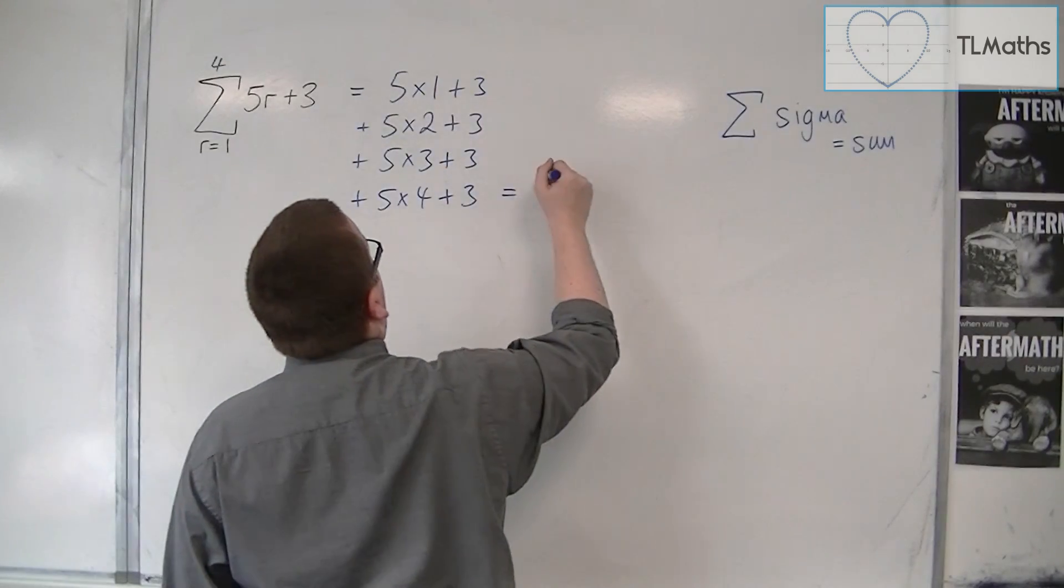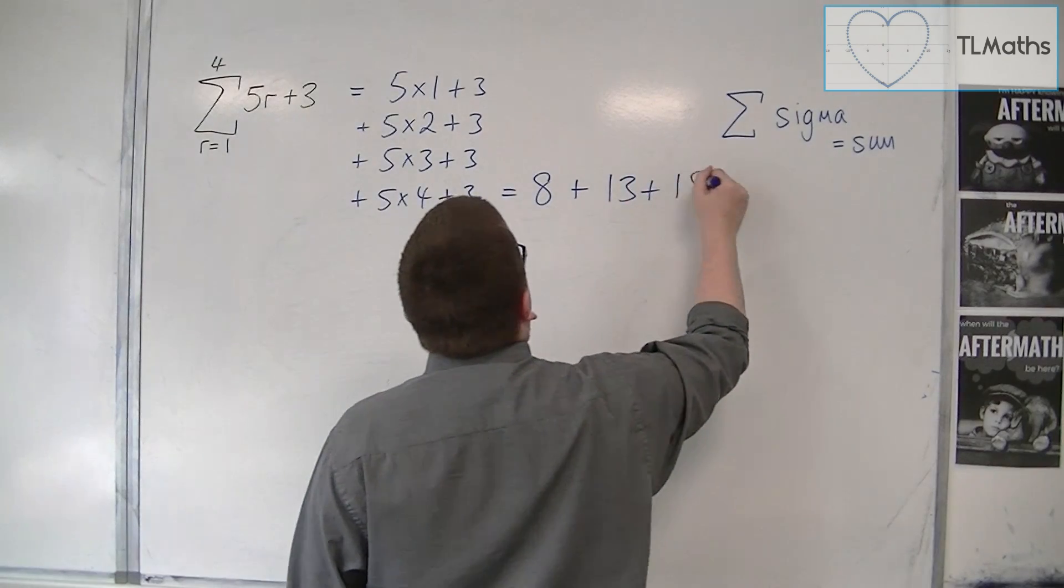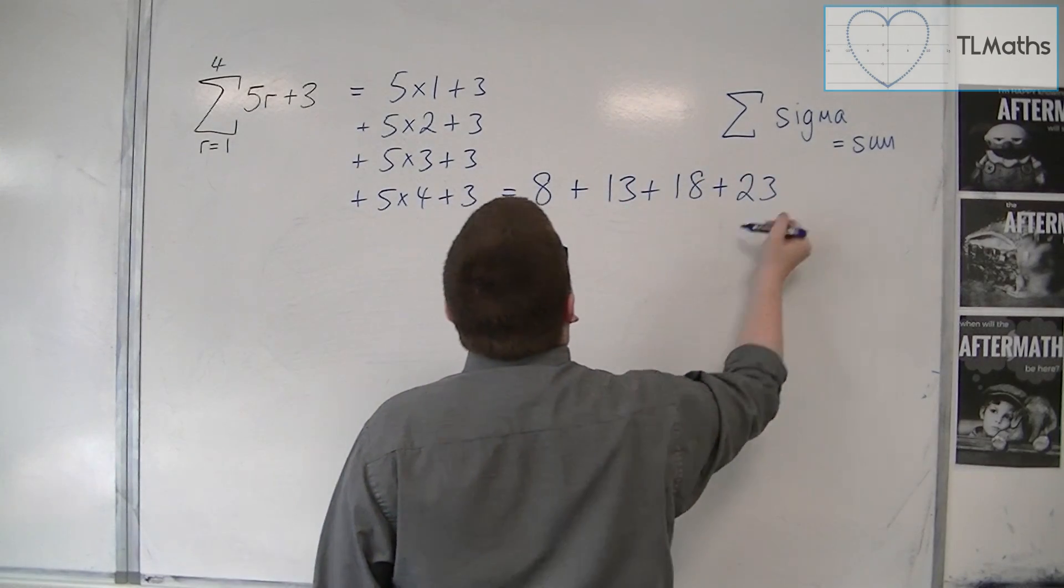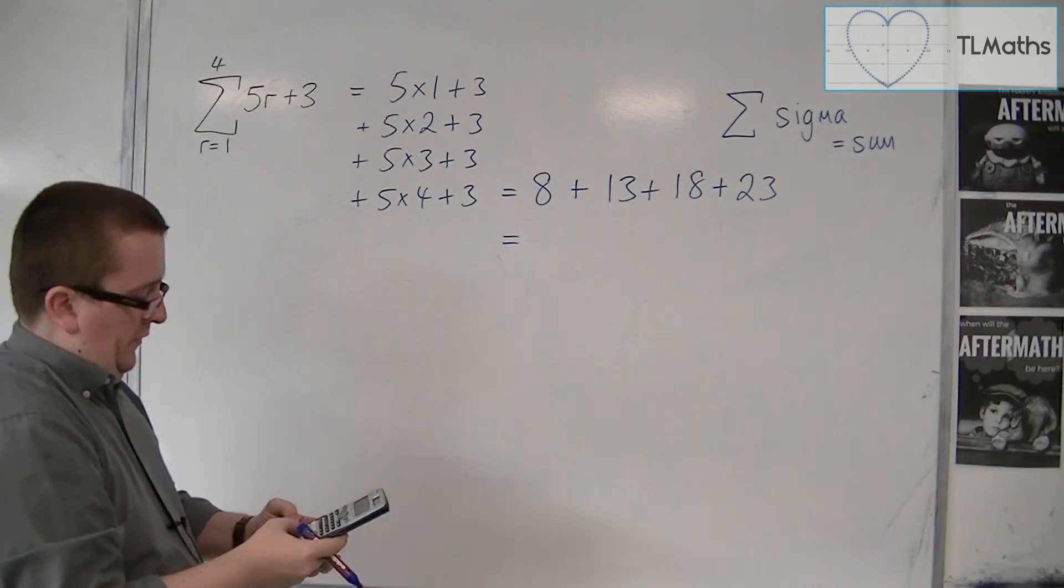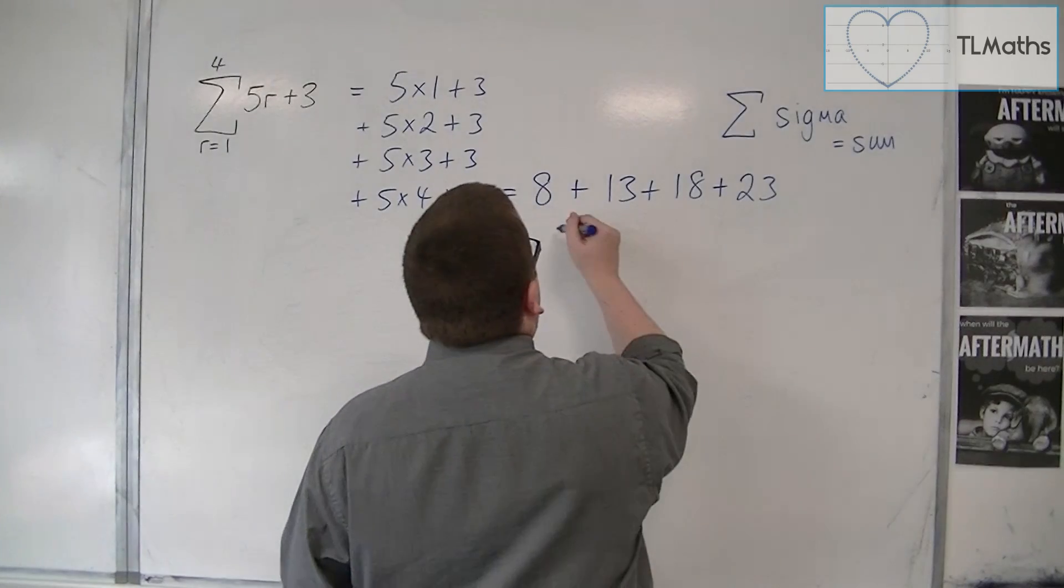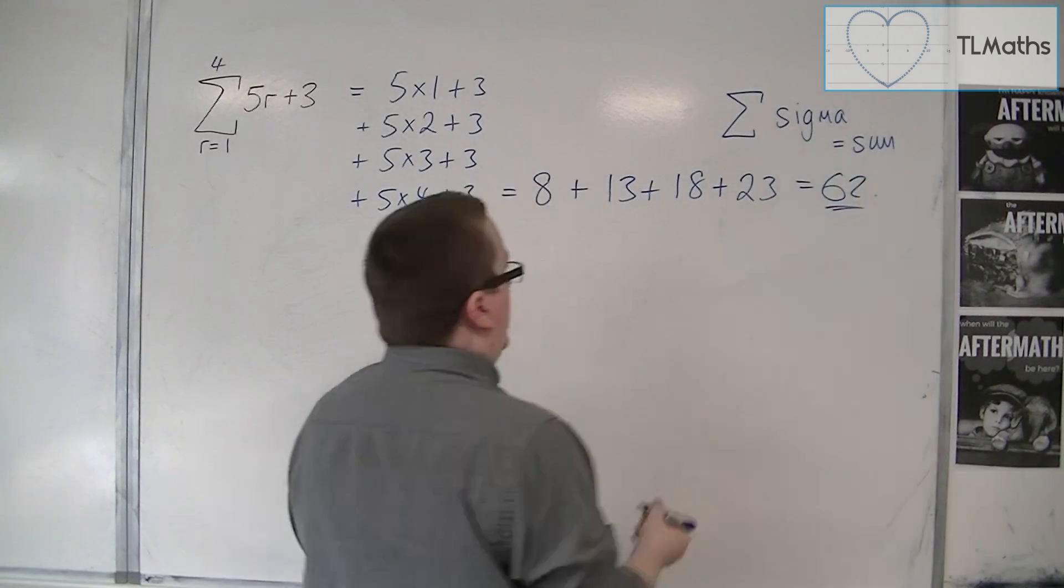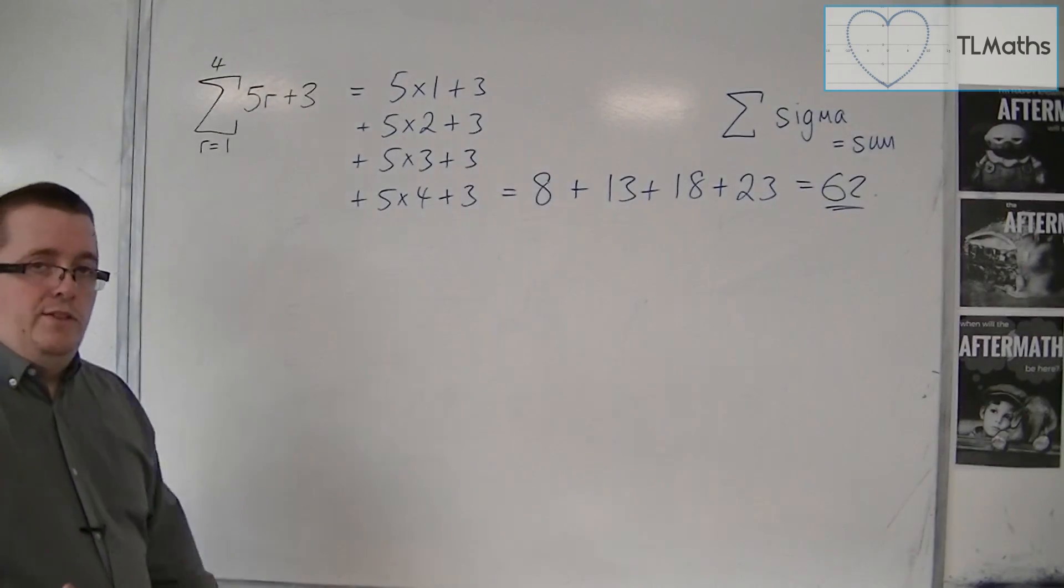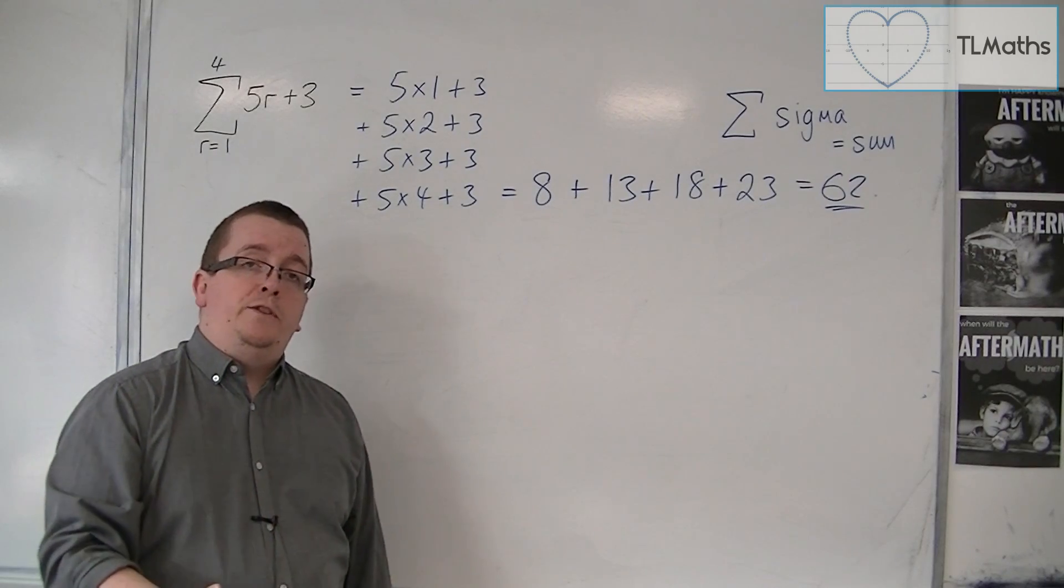So we would have 8 plus 13 plus 18 plus 23. So 8 plus 13 plus 18 plus 23 gets me 62. So that is how I can evaluate a sum given to me as sigma notation.